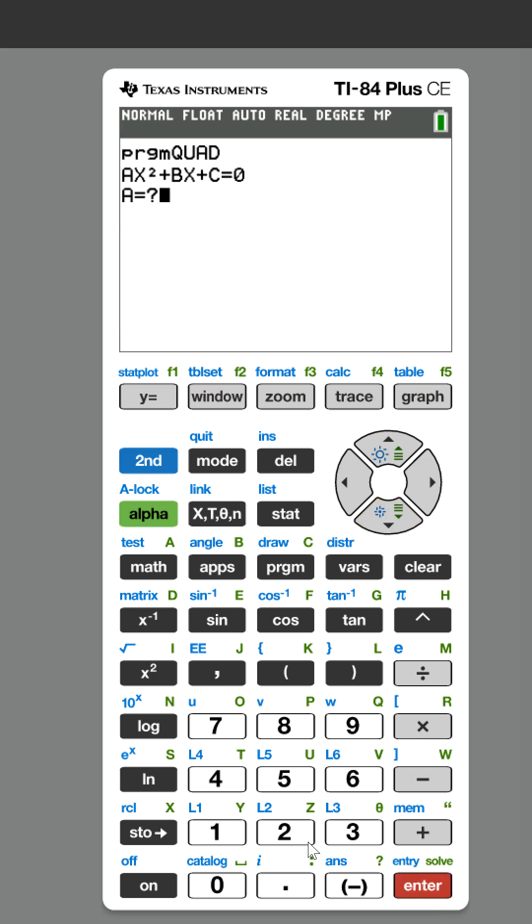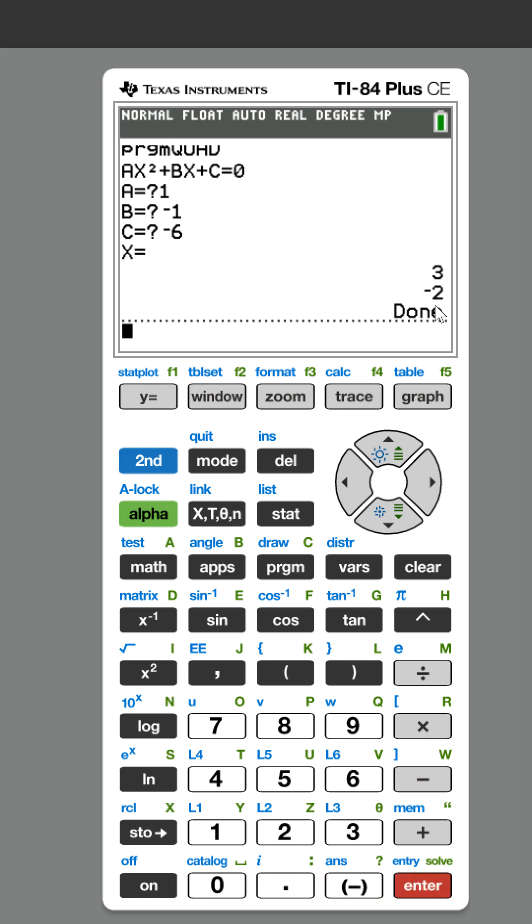You hit enter to run it. And then let's say the coefficients were 1, negative 1, and negative 6. My answers would be 3 and negative 2. So it did work. Congratulations on programming the quadratic formula.